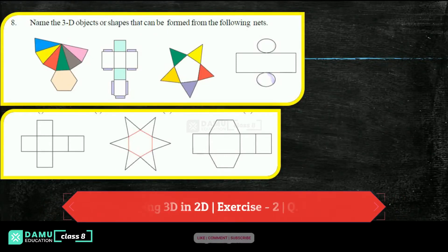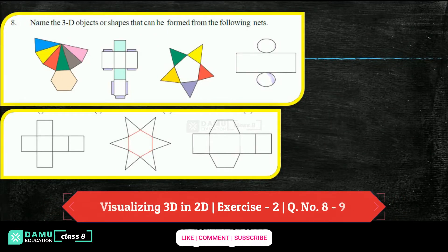Hello viewers, thanks for watching our videos. If not yet subscribed, please subscribe and click the bell icon. So, name the 3D objects — what they are given. Name the 3D objects or shapes that can be formed from the following nets. Let's take this hexagonal one, so let's write hexagonal pyramid.